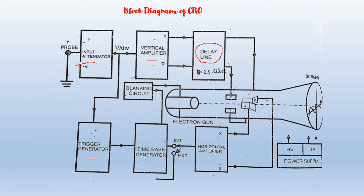The next block is the Time-Based Generator. This produces a sawtooth waveform that is used as the horizontal deflection voltage of the CRT. The rate of rise of the positive-going part of the sawtooth waveform is controlled by the time-per-division knob. The sawtooth voltage is fed to the horizontal amplifier if the switch is in the internal position. If the switch is in the external position, an external horizontal input can be applied to the horizontal amplifier.